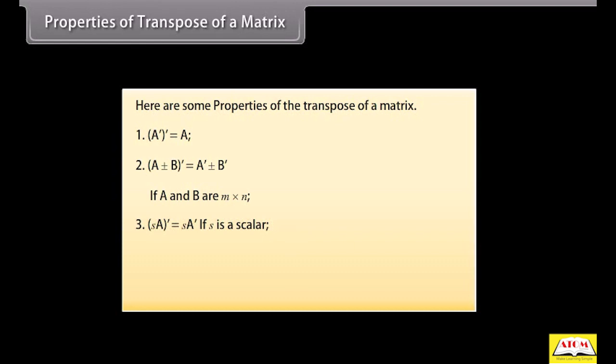Third, transpose of S times matrix A is equal to S times transpose of matrix A, where S is a scalar. Fourth, transpose of matrix AB is equal to transpose of B times transpose of A, if A is M by N and B is N by P.